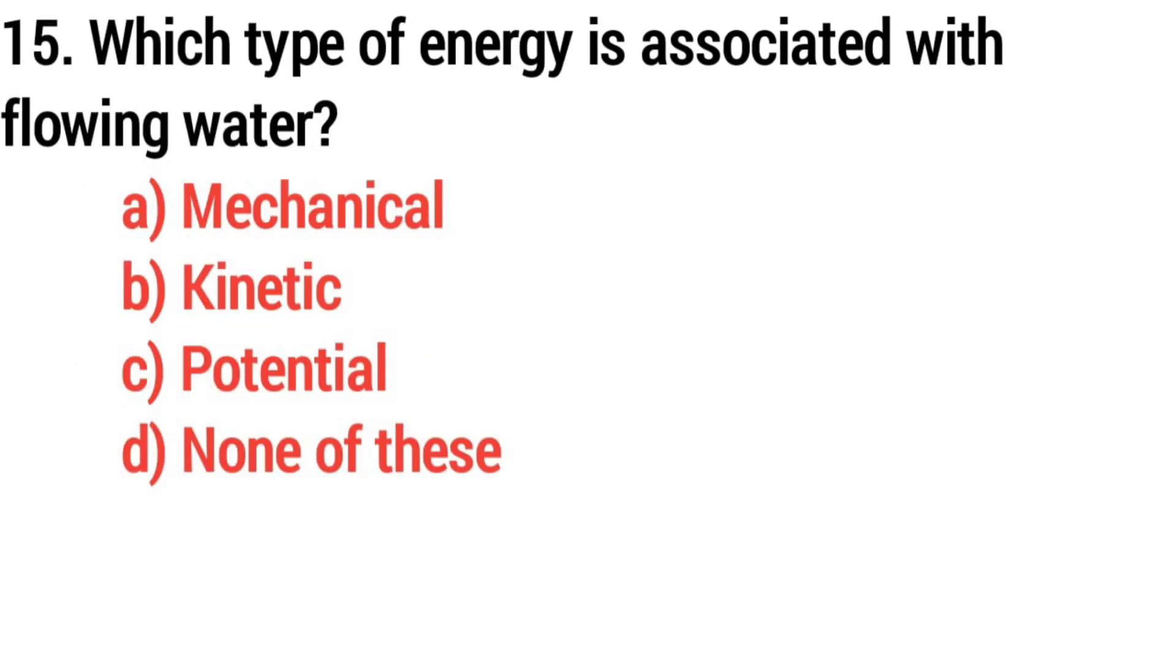Question number 15. Which type of energy is associated with flowing water? Answer: Option B, Kinetic.